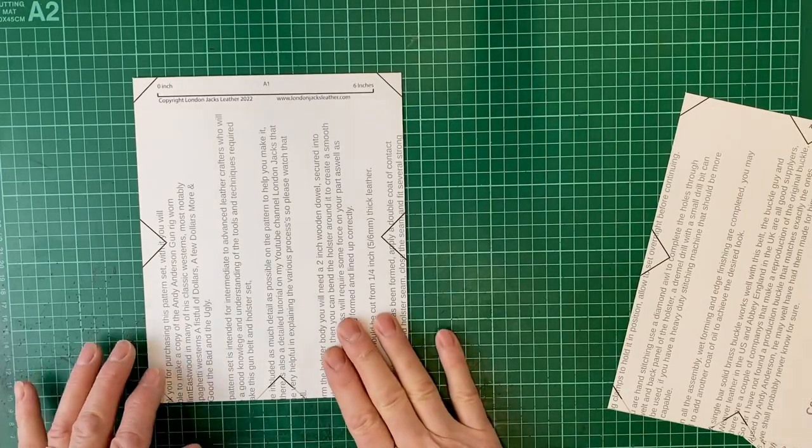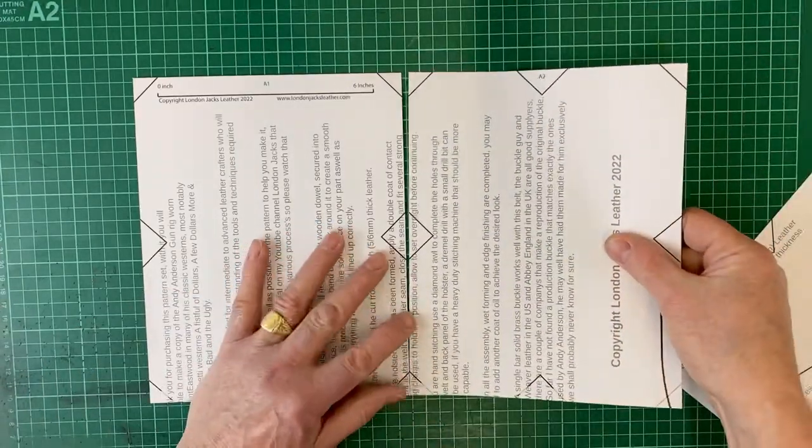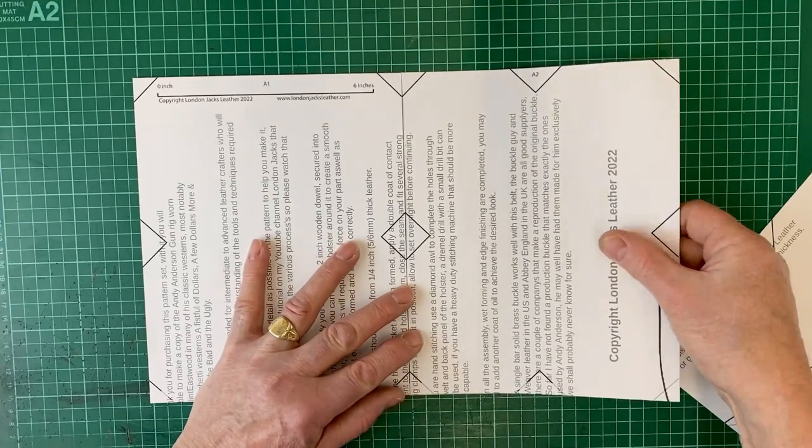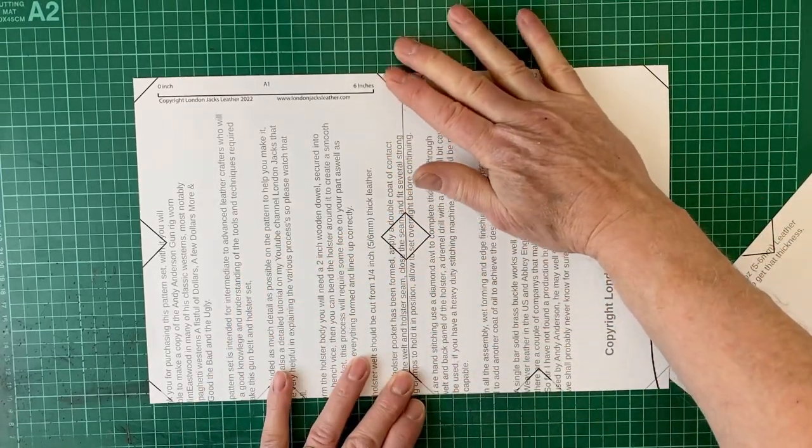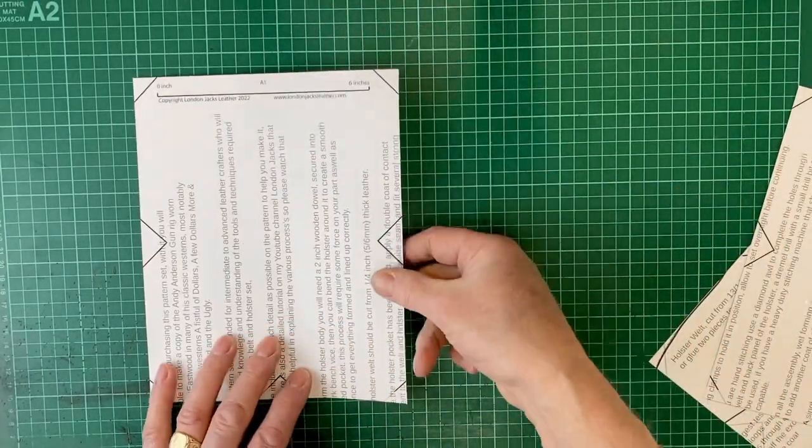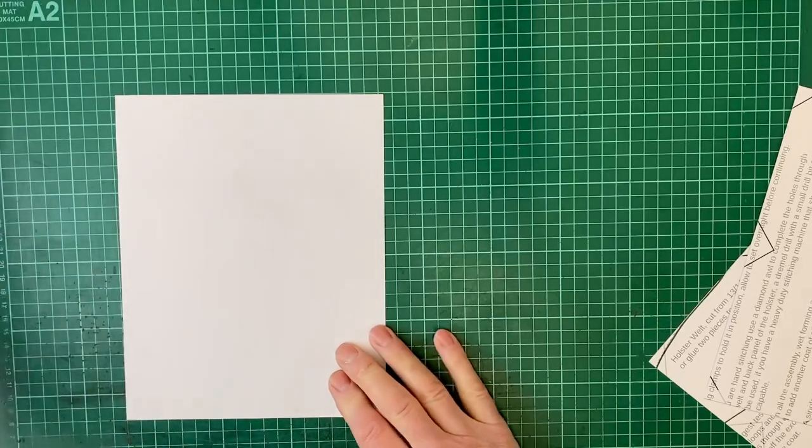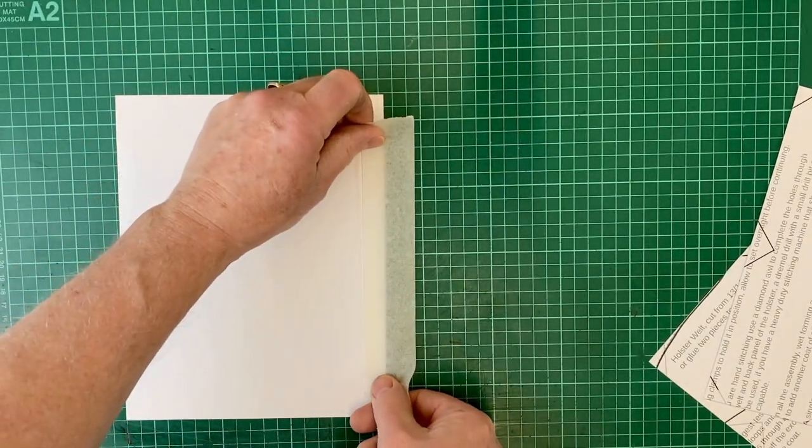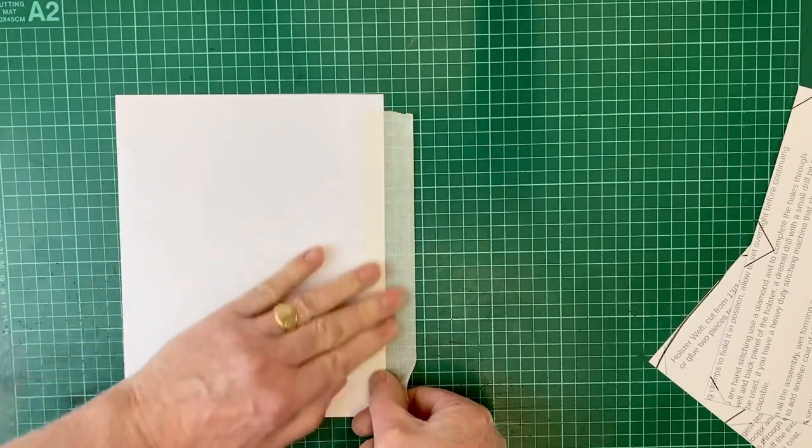Once you've got all the edges trimmed, you can start assembling the pattern. As you can see, line up the registration marks and that's the start of the pattern. Now what I like to use is a bit of masking tape. You can use clear tape and masking tape on the back.